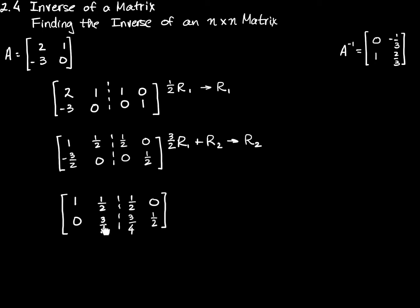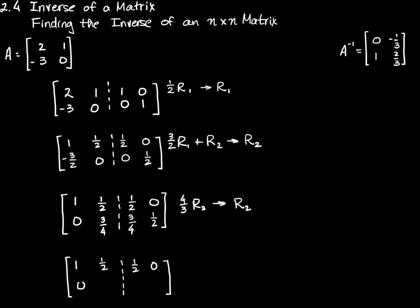Now I have a 1 in this position and a 0 below it. The next thing is to take the next pivot and turn it into a 1 by scaling. I'm going to take row 2 and multiply it by 4 thirds, and that's going to become my new row 2. Row 1 stays the same. 4 thirds times 0 is 0, 4 thirds times 3 fourths is 1, 4 thirds times 3 fourths is 1, and 4 thirds times 1 half is 4 sixths, which is 2 thirds.